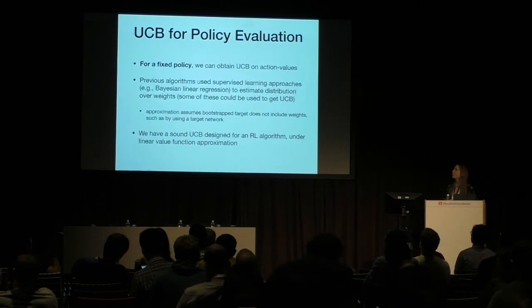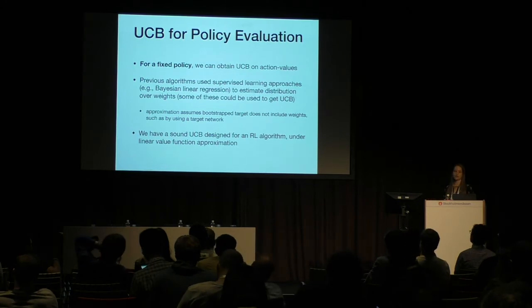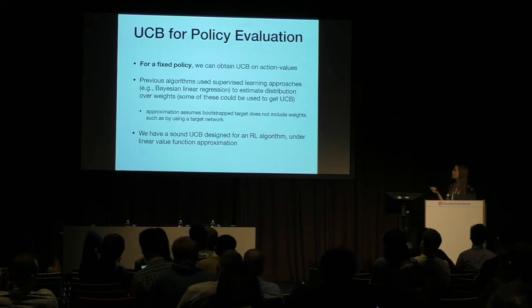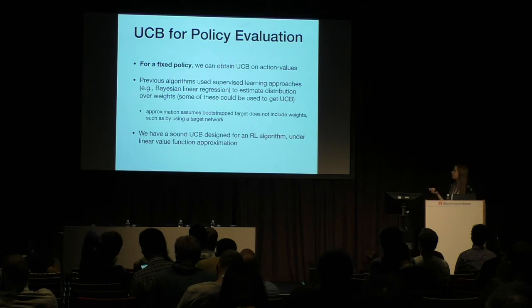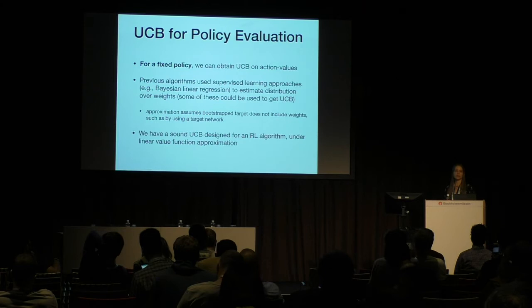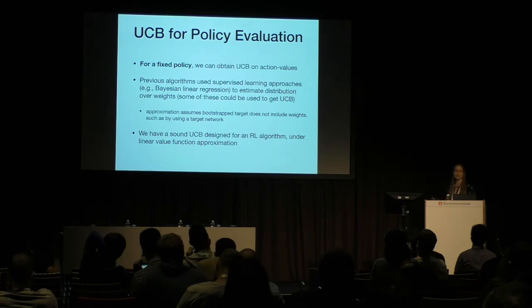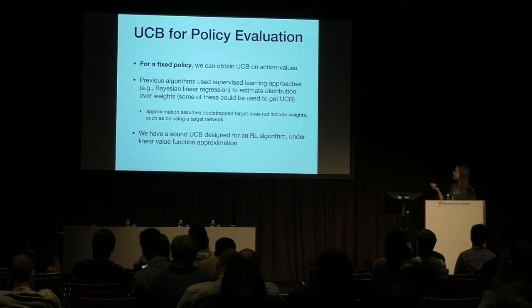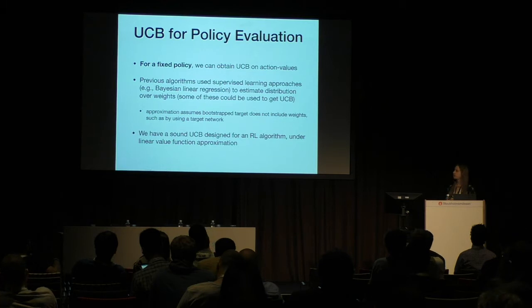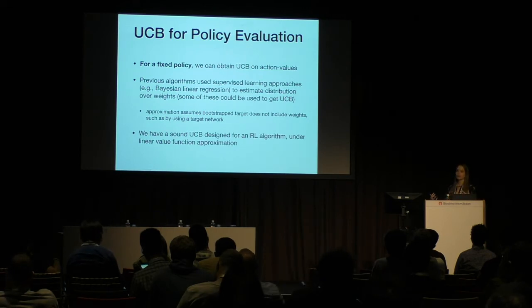There is some hope. We can compute upper confidence bounds when our policy is fixed — the policy evaluation case. Several previous algorithms try to estimate distributions over weights given data: bootstrap DQN, RLSVI, Bayesian Deep Q Networks. They use supervised learning strategies, treating the bootstrap target — reward plus gamma times future action values — as if it's a fixed value, not involving current weights. Then they apply something like Bayesian linear regression to get uncertainty estimates. This is an approximation since we're actually bootstrapping, or if using a target network.